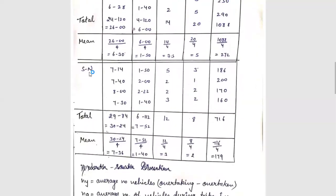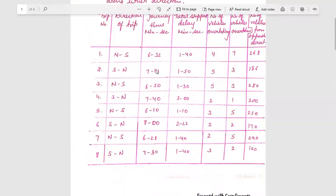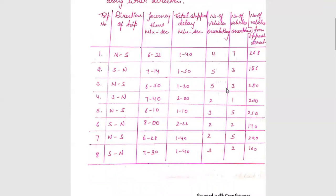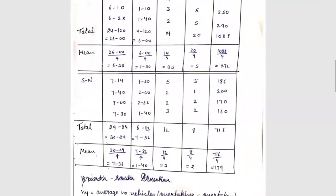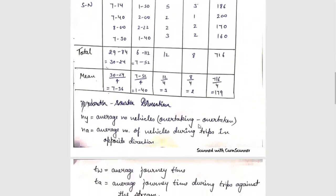Now I will do the same procedure for the south-to-north direction. I have written all south-to-north data together. Totaling gives 29 minutes 84 seconds, which I write as 30 minutes 24 seconds for journey time, and 6 minutes 12 seconds written as 7 minutes 52 seconds for stop delay. Overtaking is 12, overtaken is 8, and the opposite direction count is 716 vehicles. Taking the mean gives: 7 minutes 36 seconds journey time, 1 minute 40 seconds stop delay, 3 overtaking, 2 overtaken, and 179 vehicles opposite direction.